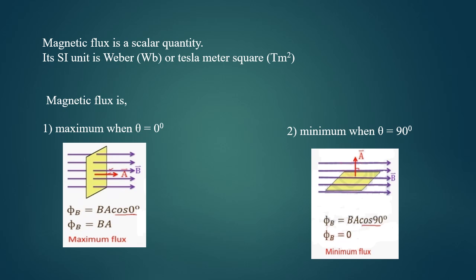Hence I observe more of the number of field lines passing through the surface, hence the flux is maximum. In the second case, we shall consider a plane placed parallel to the magnetic field lines.